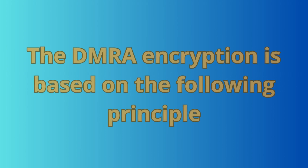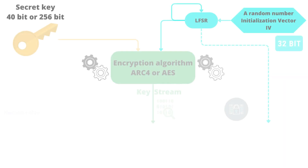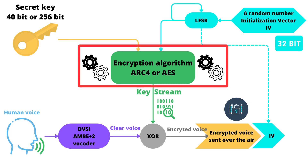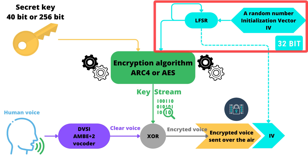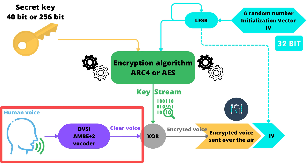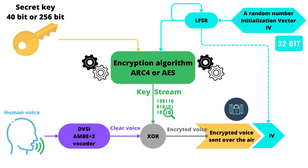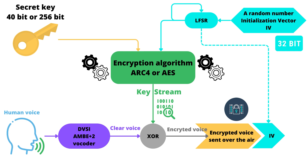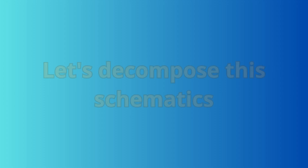Now let's study the DMR encryption, which is based on the following principle — I will show you schematics. First, a secret key. Second, an encryption algorithm. Third, a random number which is the IV. Fourth, a vocoder to encode a human voice, an exclusive OR — and this makes the encrypted voice sent over the air.